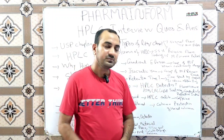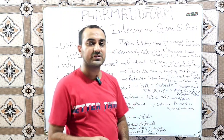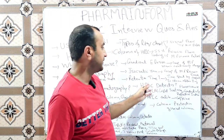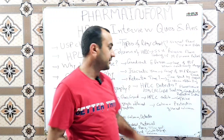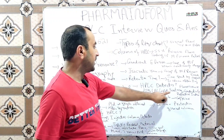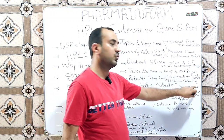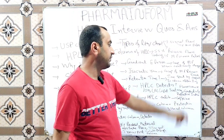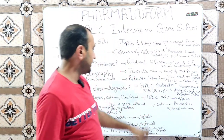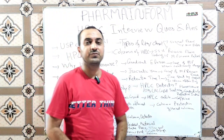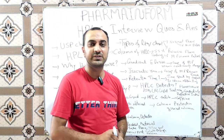What are the various HPLC detectors? The various HPLC detectors are: PDA detector, UV detector, light scattering detector, conductivity detector, fluorescence detector, and refractive index detector.